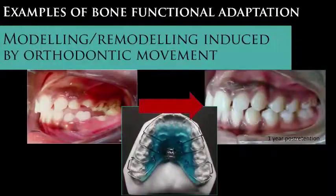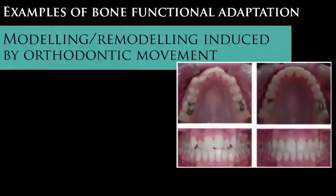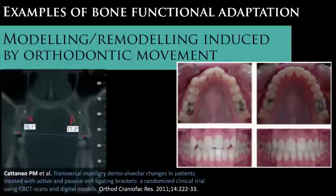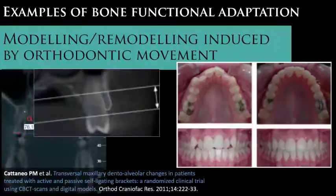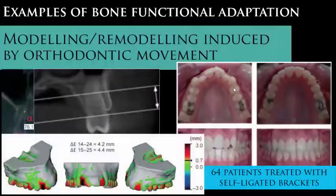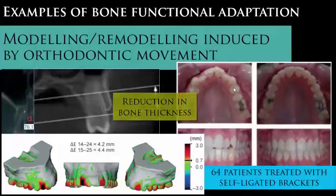About 1 year after the removal of the retainer, we observed adequate maintenance of the correction obtained. We also moved teeth with the use of fixed appliances, as in this interesting study with cone beam computed tomography and 3-dimensional model analysis. The aim of this study was to evaluate the dental inclinations and alveolar bone changes induced by orthodontic treatment with self-ligating brackets — both passive and active — in 64 patients. The results showed that teeth expanded mainly by inclination, and the alveolar bone significantly changed its shape, suffering a significant reduction in the vast majority of cases.